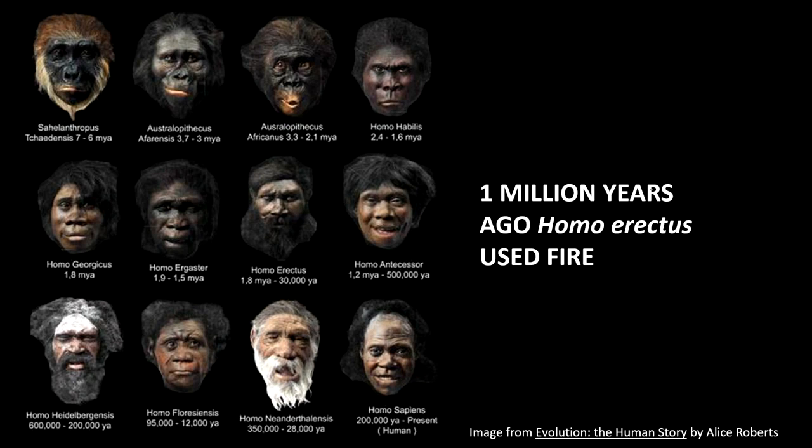If you were to go back in time a million years, you could actually find a number of different human ancestors and relatives spreading throughout the Earth. This includes Homo erectus, which was alive about a million years ago — shown in the middle of this image, which are recreations of what some of these faces of our ancestors and relatives would have looked like. Homo erectus was part of the first major expansions of humans out of Africa, had the beginnings of language, and used fire.